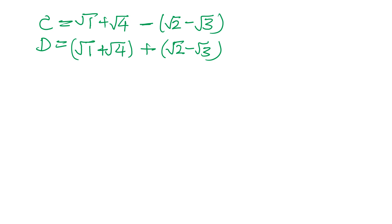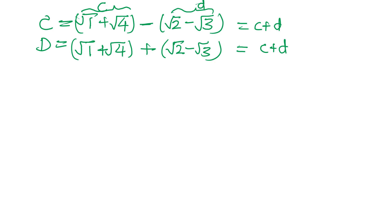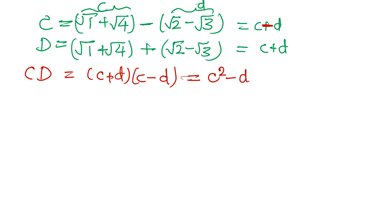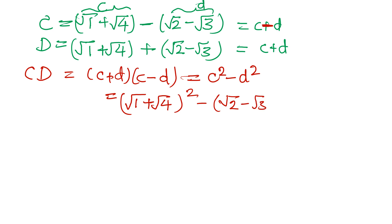You can check all 4 values. Now you can see the same task. If I consider this is my small c and this is my small d, then again we can see this is equal to small c plus small d, and this is equal to small c minus small d. Capital letters are given in the problem. So if I write C times D equals c plus d times c minus d, it will come out as c squared minus d squared. Let us put the value: root 1 plus root 4, whole square, minus root 2 minus root 3, whole square.